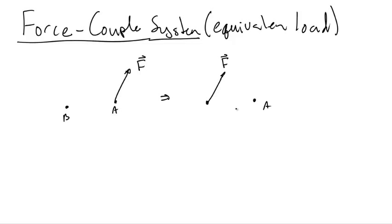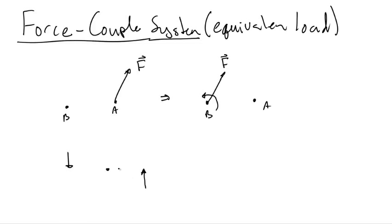But since in the original case force F had a moment about B, and now since force F is at B there is no moment at B, that moment must be replaced by a couple. Therefore this is called a force and couple system.